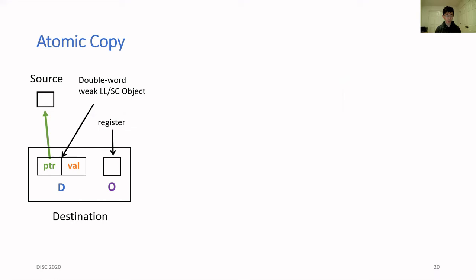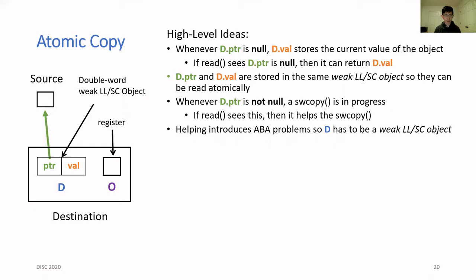The final step is to look at how we implement atomic copy using weak LL/SC. The destination objects are internally represented by two variables, D and O. D is a double-word weak LL/SC object that stores both the pointer and the value, and O is just a register.